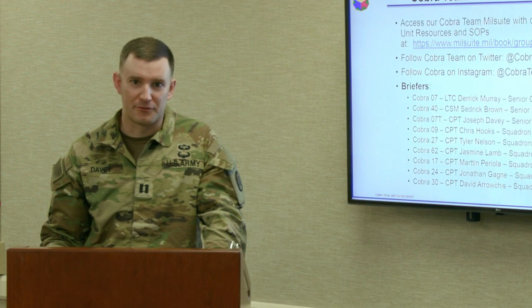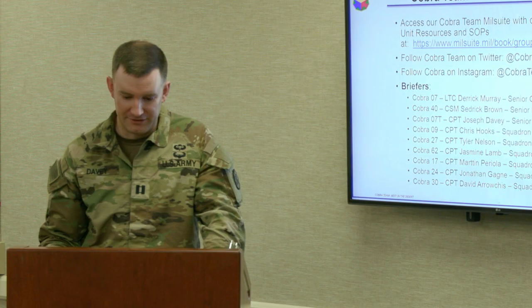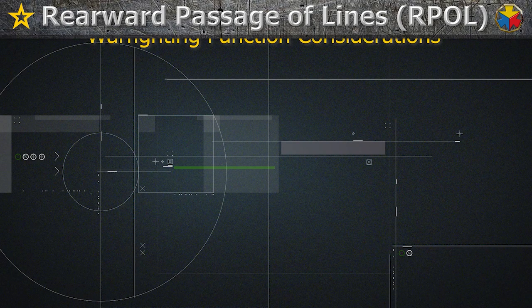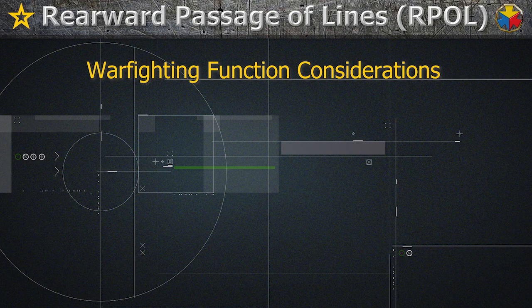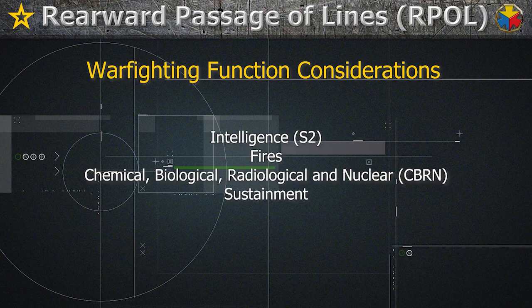You will now hear from Cobra OCTs addressing considerations for the following warfighting functions: Intelligence, Fires, CBRN, Sustainment, Medical, and Command and Control.